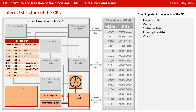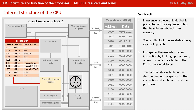There are five other very important components of the CPU. While not listed in the specification, they're really important to know about and will add to your understanding of how the processor works. The decode unit is essentially a piece of logic that's presented with a sequence of bits which have been fetched from memory. You can think of it in an abstract way as a simple lookup table — it prepares the execution of an instruction by looking up the binary operation code it's received in its table so the CPU knows what to do. The fixed number of commands available in the decode unit will be specific to the instruction set architecture of that particular processor.